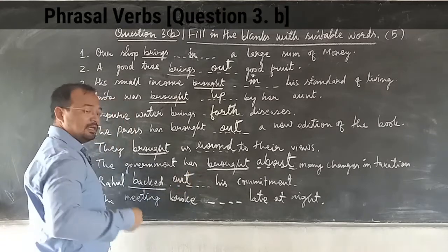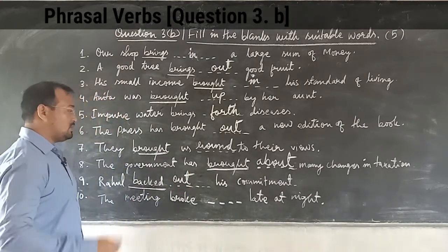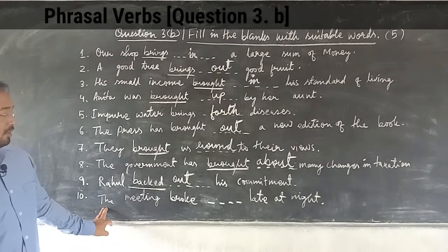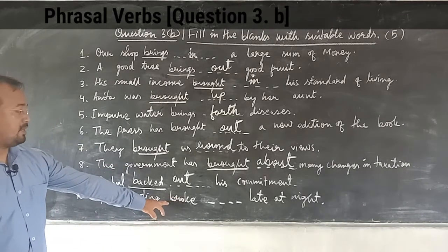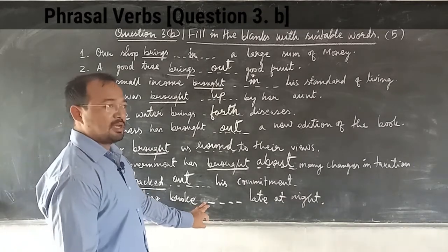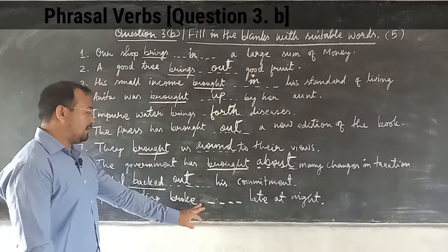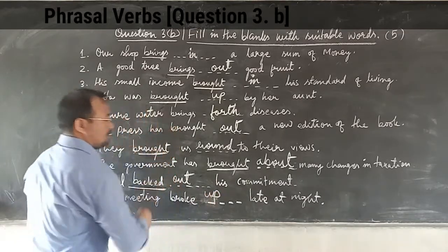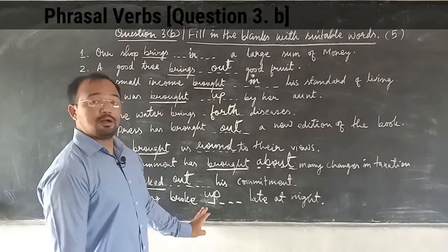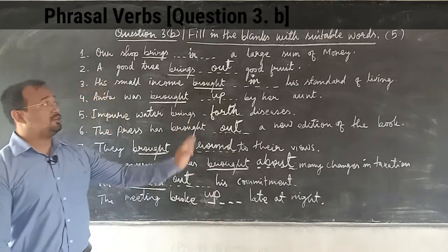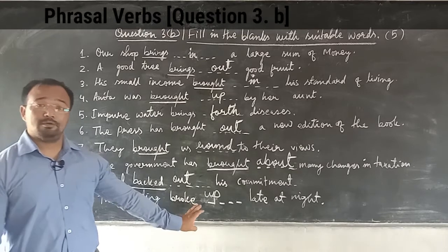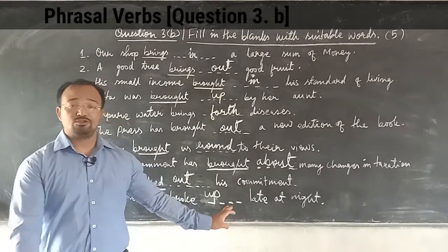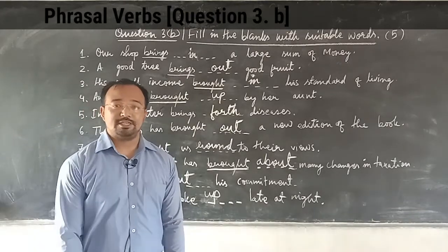'Backed out' means to leave or withdraw — Rahul backed out from his commitment. Next: 'The meeting broke ___ late night.' As explained earlier, this means to end — so the answer is 'broke up'. This is how you complete such exercises in your paper and gather five marks. Thank you so much for this class. Stay home, stay safe.